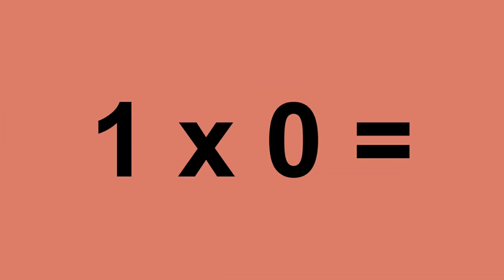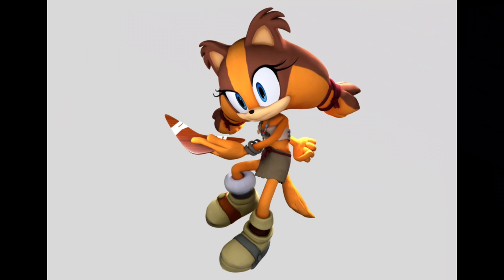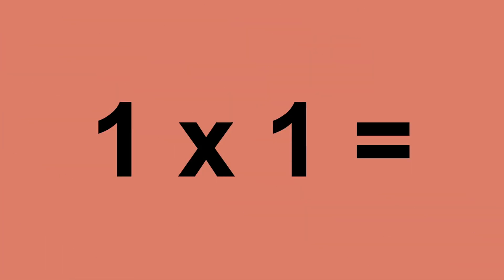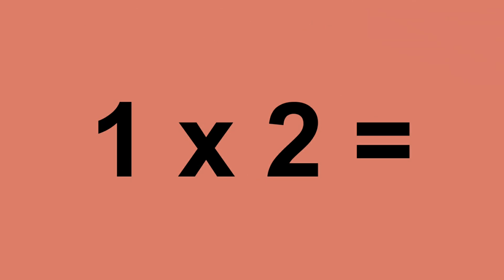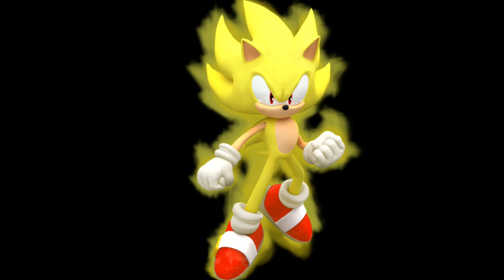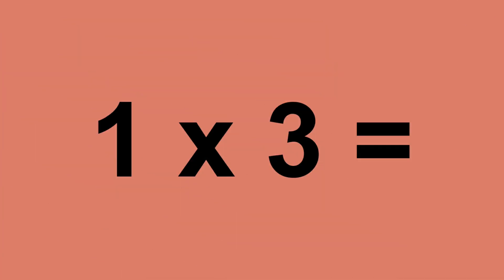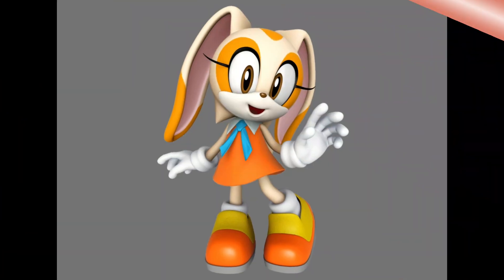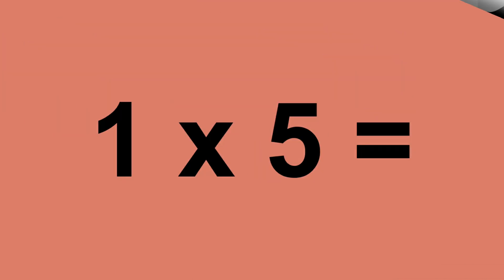One times zero equals zero. One times one equals one. One times two equals two. One times three equals three. One times four equals four. One times five equals five.